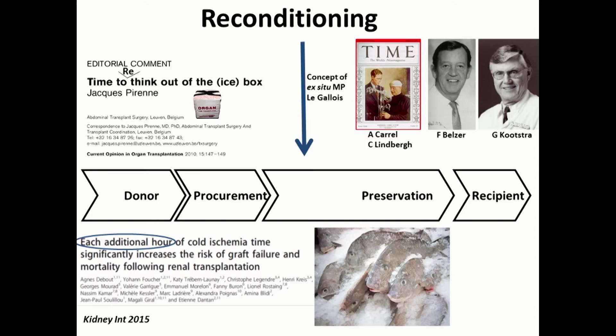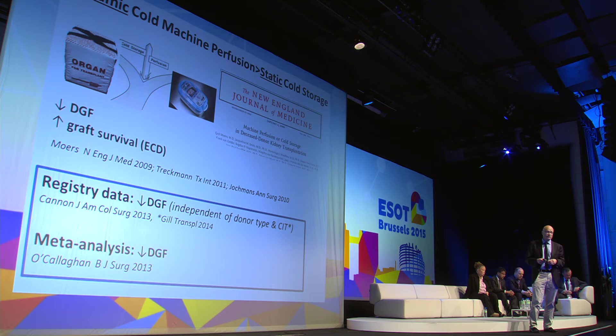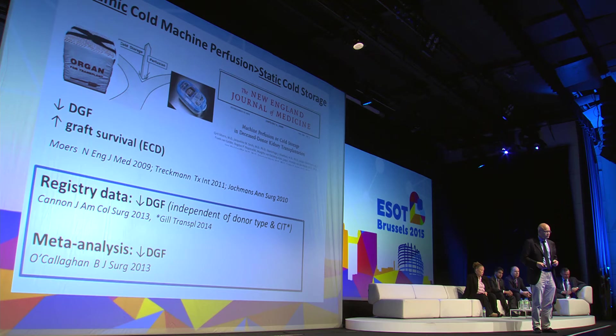Just to list a few pioneers: Kustra, Belzer, Lindbergh, Carroll. We need to move forward and be dynamic. This landmark trial clearly showed that dynamic cold machine perfusion is superior to static cold storage — there was a reduced delayed graft function rate with machine perfusion. Since this publication, those data have been confirmed by registry data and also by meta-analysis.